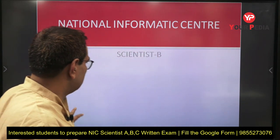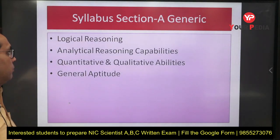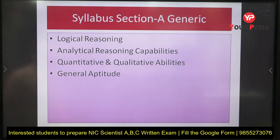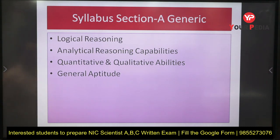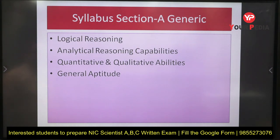Let us first see the syllabus for Section A — the generic syllabus. The mentioned syllabus includes logical reasoning, analytical reasoning capabilities, quantitative and qualitative abilities, and general aptitude. This is the syllabus for Section A, which we call the generic section.